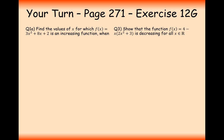Pause the video and have a go at this question. f(x) = 3x² + 8x + 2 is an increasing function when... We differentiate to get 6x + 8. We want to find when 6x + 8 > 0. Taking 8 to the other side gives 6x > −8. Dividing through by 6, x > −4/3.